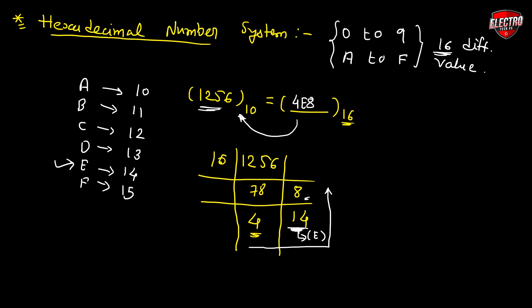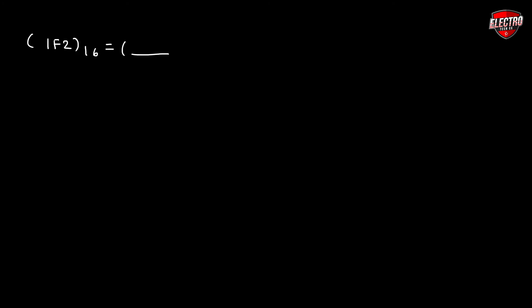The process is simple — take the number and divide by the base of the target number system. For the next example, we have 1F2 in the hexadecimal number system and we have to convert it into the decimal number system. Write the equation: 1F2, where F is equivalent to 15 in decimal. Then write the positional weights: 2 × 16⁰, F × 16¹, and 1 × 16².